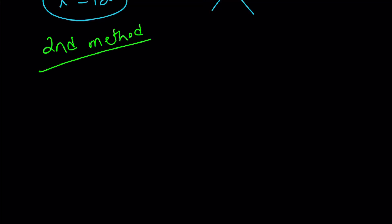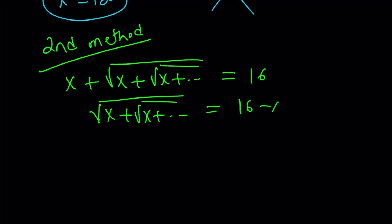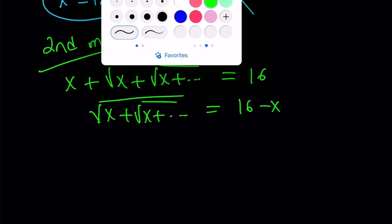My second method is going to be shorter. No pain, no gain. Let me rewrite my original equation. Here's what I'd like to do. I'm going to subtract x from both sides, something like this, 16 minus x. Then I would like to square both sides.